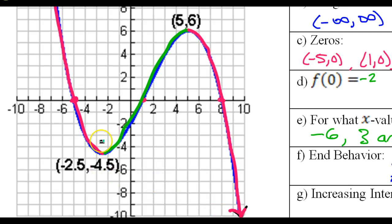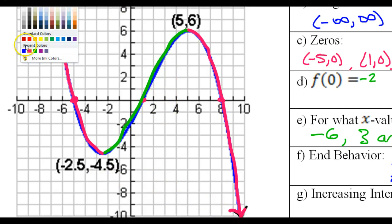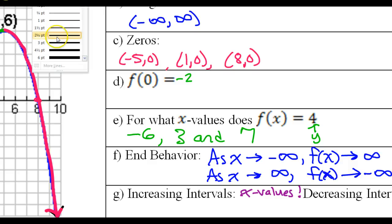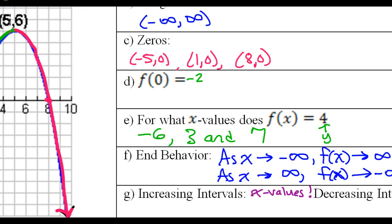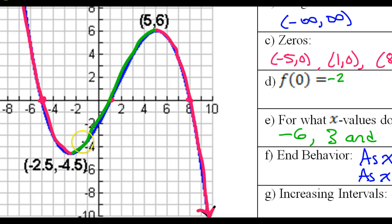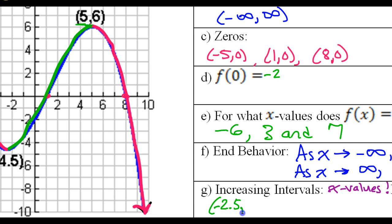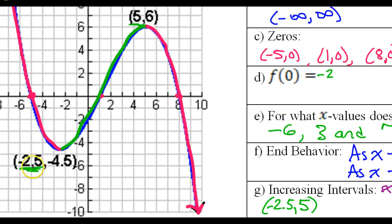Let's do the one increasing interval first. These intervals have to be x values. The x values from the local minimum to the local maximum are negative 2.5 to 5. So the increasing interval is from negative 2.5 to 5.